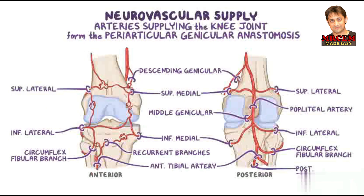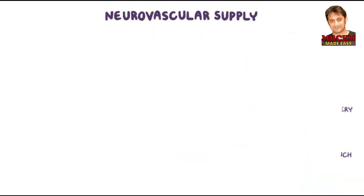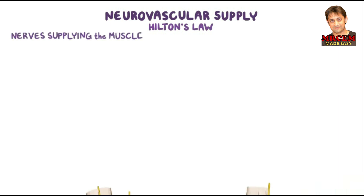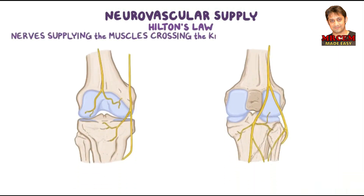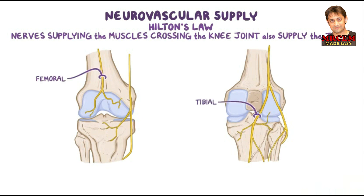Going back to Hilton's Law, the nerves supplying the muscles crossing the knee joint also supply the joint. These include articular branches from the femoral, tibial, and common fibular nerves, as well as the saphenous nerve.